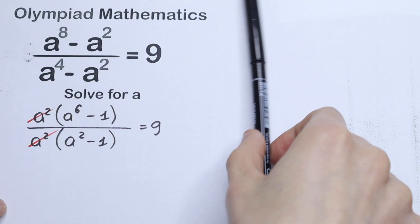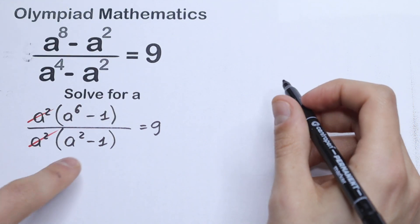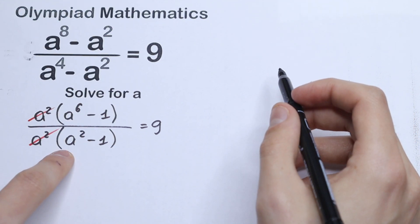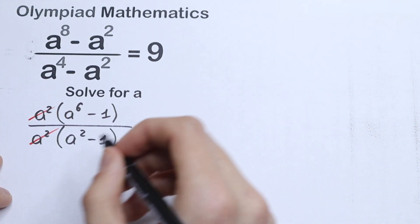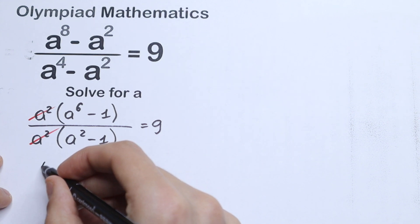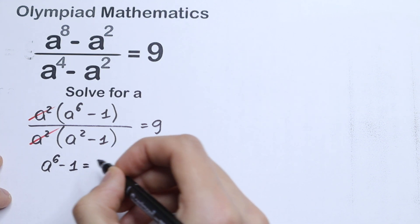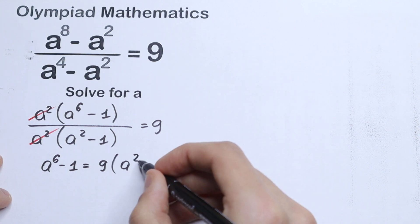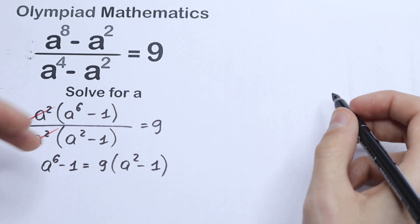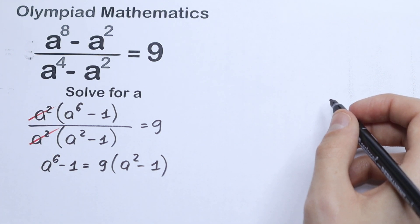So let's write our equation next, and let's multiply both sides by a squared minus 1 — cross multiplying. As a result we will have a to the sixth power minus 1, equal to 9 times a squared minus 1. We cancel the a squared and we have this equation.